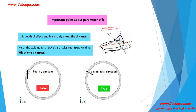Here I want to refer to a main point about the b parameter. As previously mentioned, b is the depth of the ellipse and is normally directed along the thickness. A question is posed: if the welding torch travels a circular path, which picture is correct? In the left picture b is directed along y, and in the right picture b is in a radial direction. Since b should be directed along the thickness, the right picture is correct — meaning b should be in a radial direction.